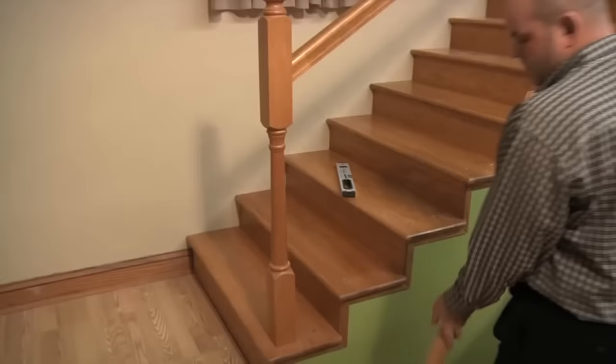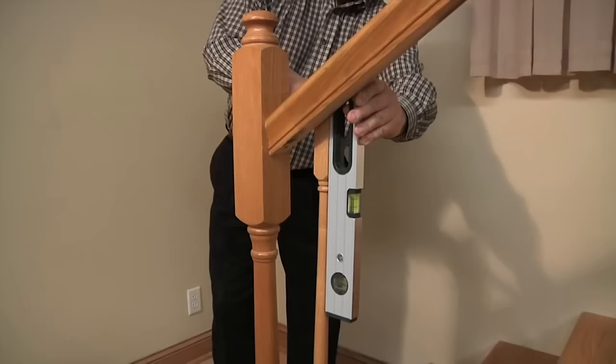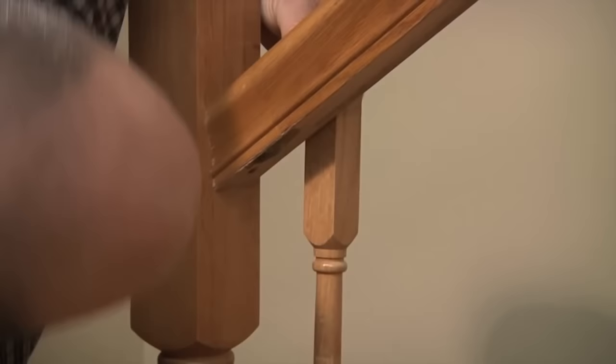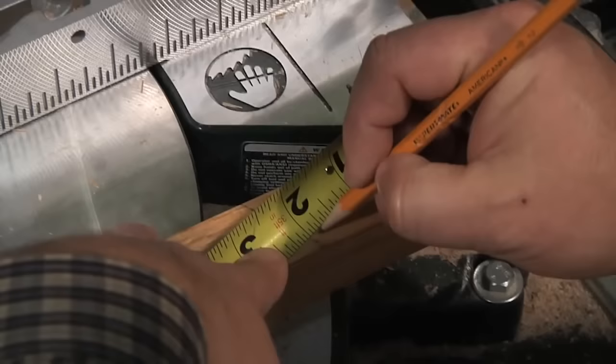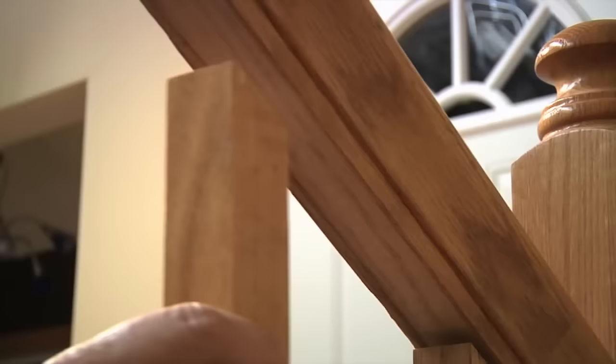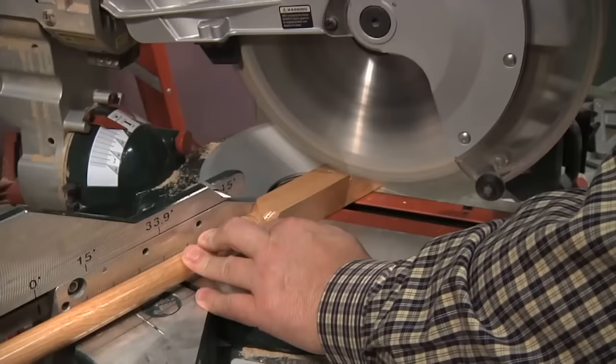Next, insert the baluster into the hole in the step and following the bottom edge of the handrail, mark the angle where you will cut the top of the baluster. Cut each baluster a sixteenth of an inch longer so it fits into the groove cut into the bottom of the handrail. Cut all the balusters to the proper length.